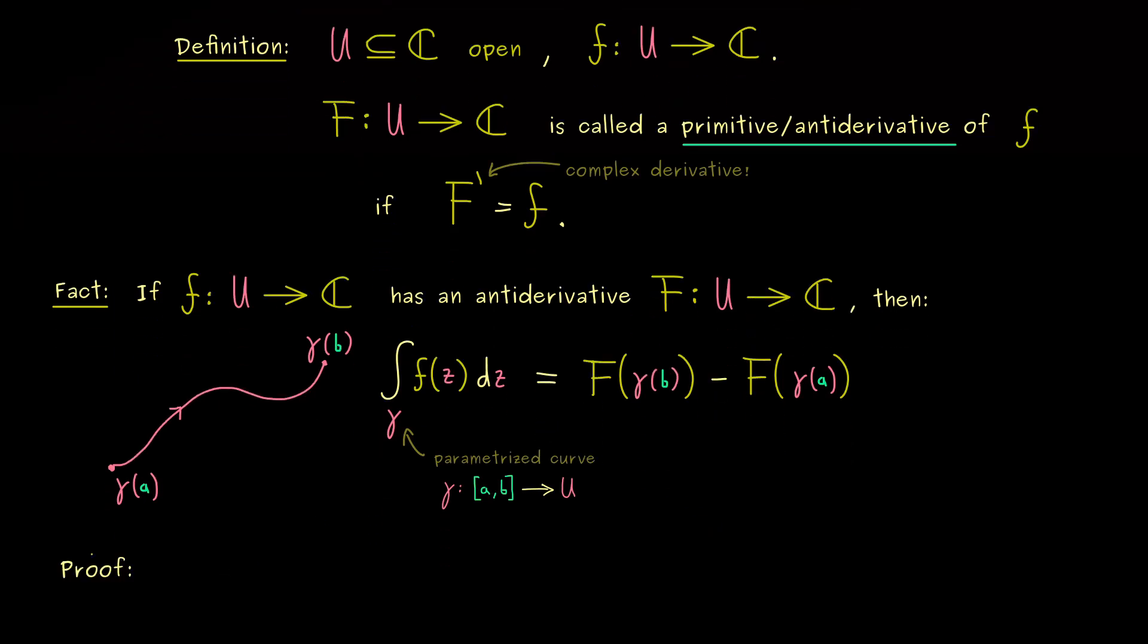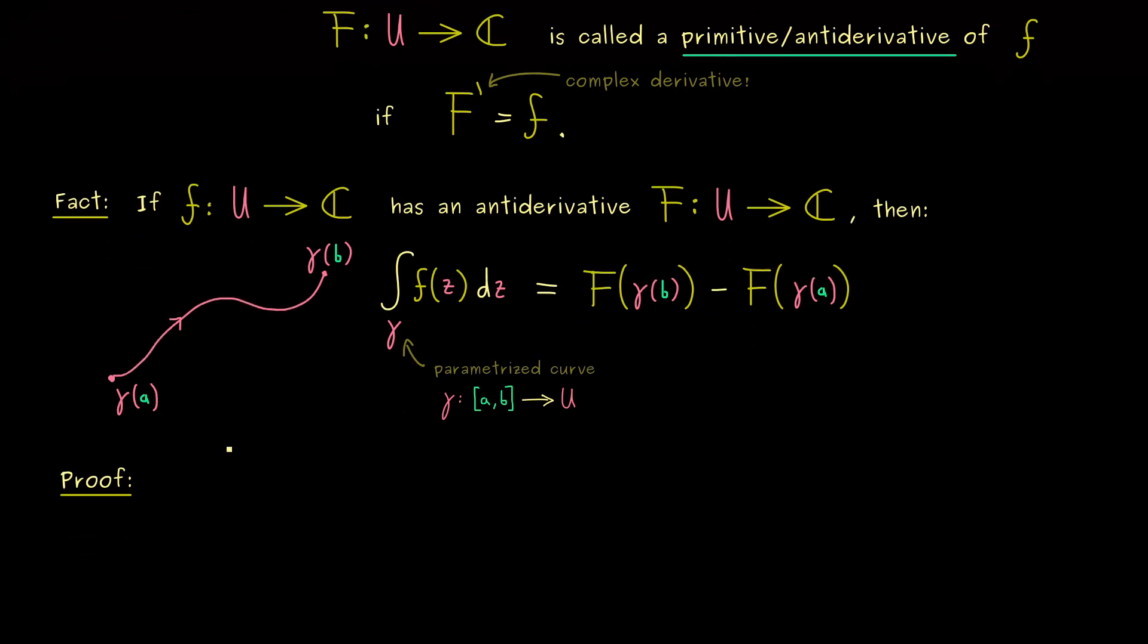However indeed this outcome here is not so surprising as we will see in the proof now. Essentially it already follows from what we have learned in real analysis. Okay so for the first step here in the proof let's recall the definition of the complex contour integral. There we know it's simply given by a complex integral on a real interval. This means it's simply a complex linear combination of two ordinary Riemann integrals in R. And this implies that we can use everything we have learned in real analysis about Riemann integrals.